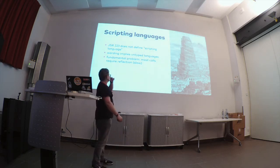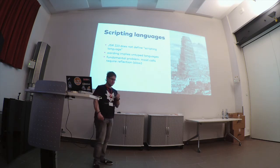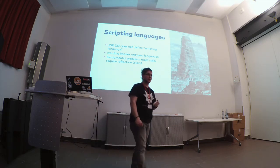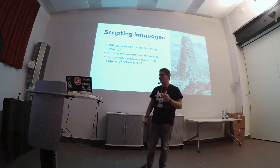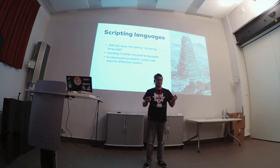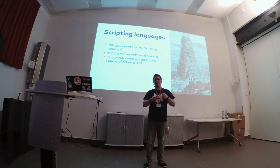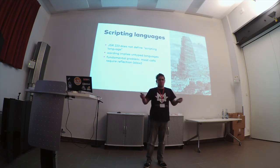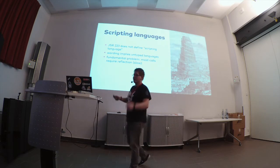The fundamental problem with untyped languages is that most function calls or other kinds of calls require reflection on the JVM, which is really slow. They sort of said: language implementers, if you implement a Python language for this JSR, you just have to live with that — just implement it using reflection, that's fine.